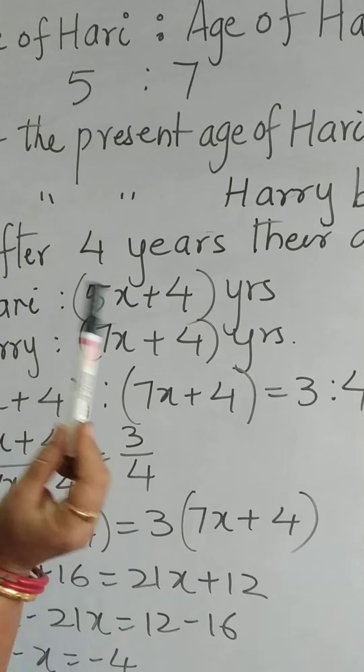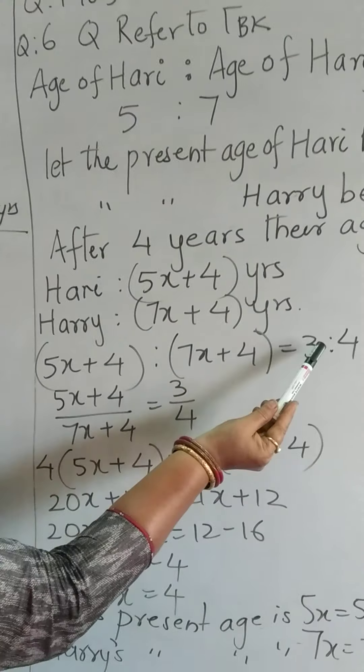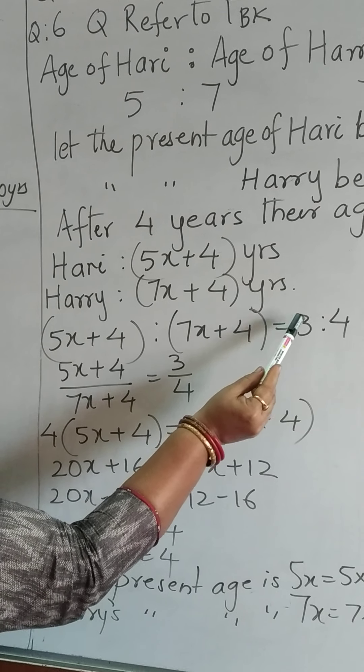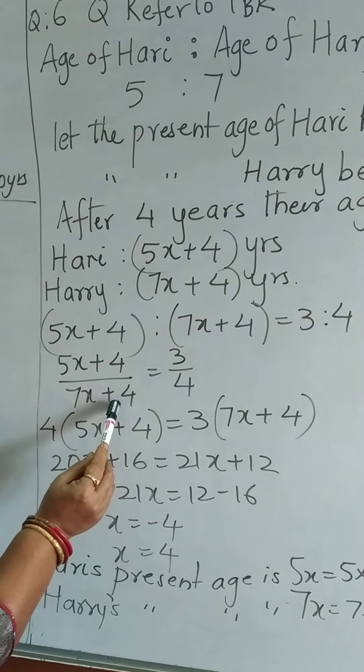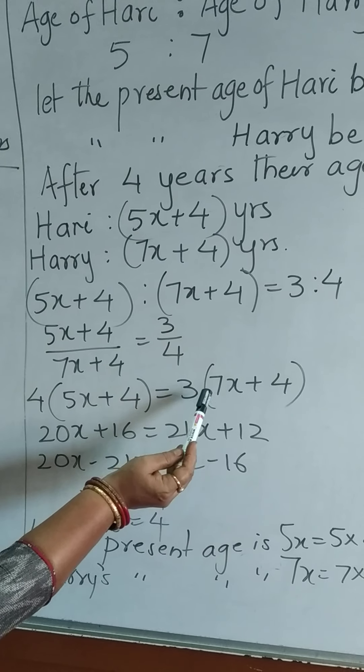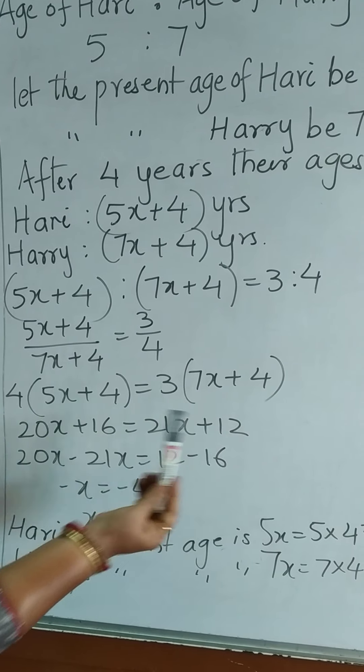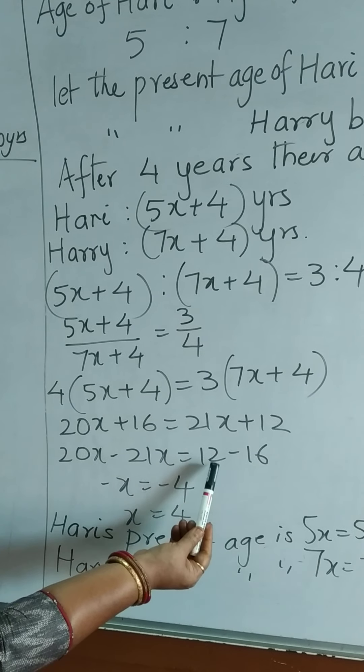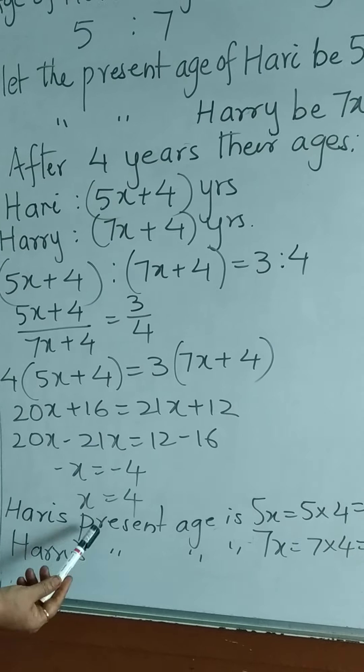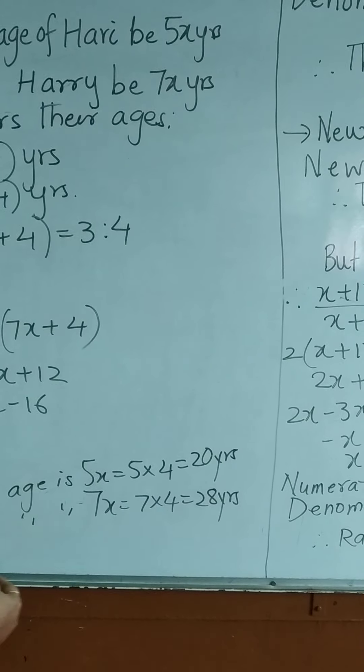After 4 years we have to add 5x plus 4, 7x plus 4, and the ratio is equal to 3 is to 4. So we write down 5x plus 4 upon 7x plus 4 is equal to 3 upon 4. Cross multiply, 4 bracket 5x plus 4 is equal to 3 bracket 7x plus 4. So we get 20x plus 16 is equal to 21x plus 12. Solve it. 20x minus 21x is equal to 12 minus 16. Minus x is equal to minus 4. x is equal to 4. So Hari's present age is 5 times 4, 20 years. Harry's age is 7 times 4, 28 years. Please write the answer.